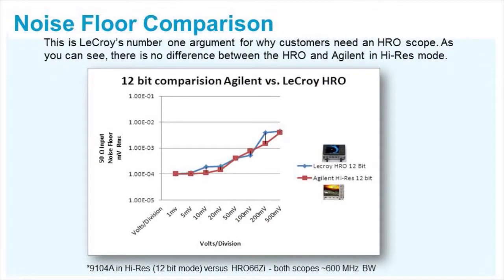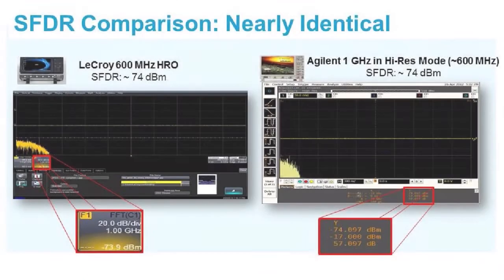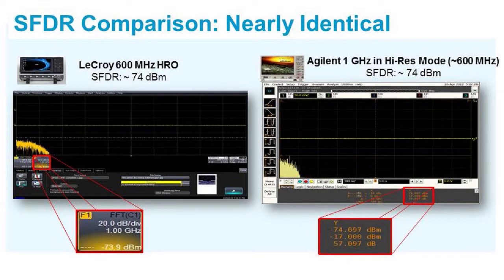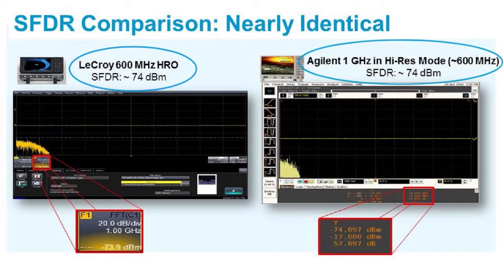If I look at a noise floor comparison of the 600 megahertz LaCroix HRO versus the Agilent 1 gigahertz bandwidth limited in high res mode to just under 600 megahertz, what you'll see is they have almost identical noise characteristics. They're both very low noise. Some engineers like to look at spurious-free dynamic range as another metric of signal quality. In high res mode, the Agilent product has the same spurious-free dynamic range as the LaCroix 12-bit oscilloscope.